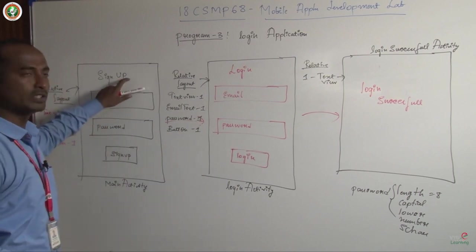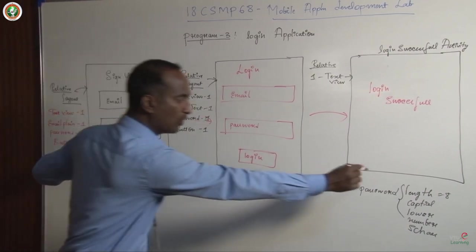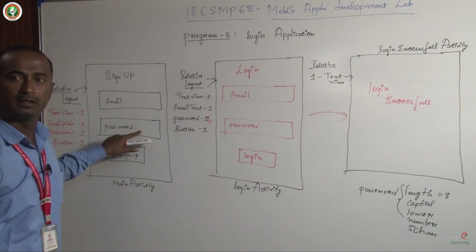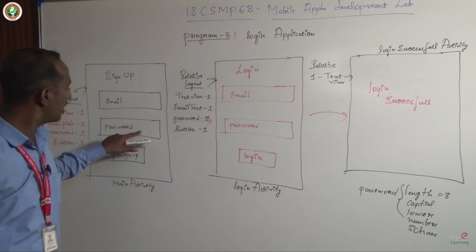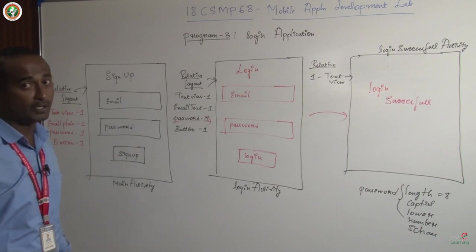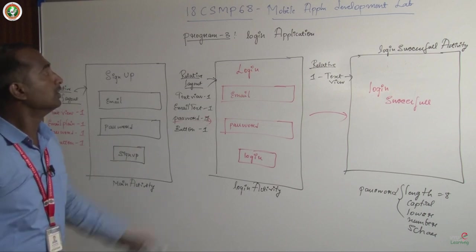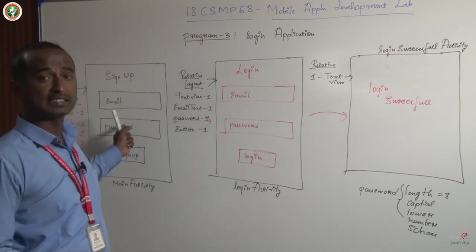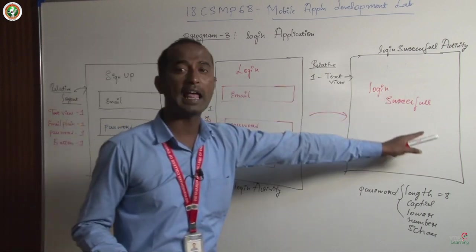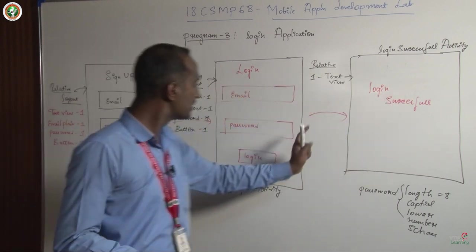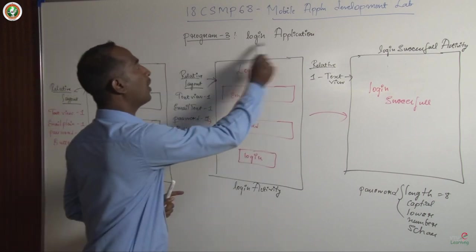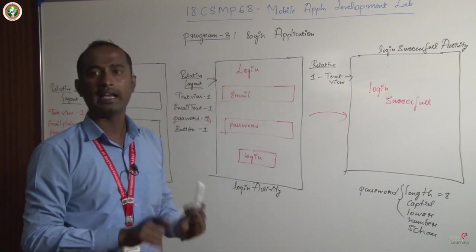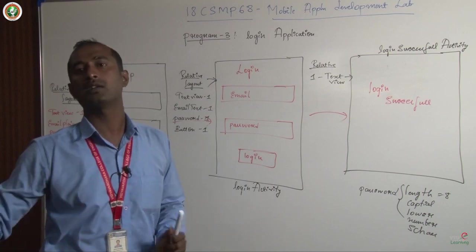The complete flow: the user gives email and password following the rules (more than 8 characters, uppercase, lowercase, special character, and number) and clicks Sign Up. Those credentials are registered. Then using the same credentials in Login, if both match, the user is transited to the Login Successful page; otherwise, access is restricted. This is Program Number 3 — Login Application.